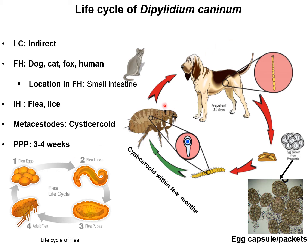The parasite lives in the small intestine of the final host and produces gravid proglottids. These gravid proglottids are detached and either migrate to the anus or pass out through the feces. Each proglottid contains around 20 eggs encircled by an embryonic membrane, also known as an egg capsule, egg sac, or egg packet.